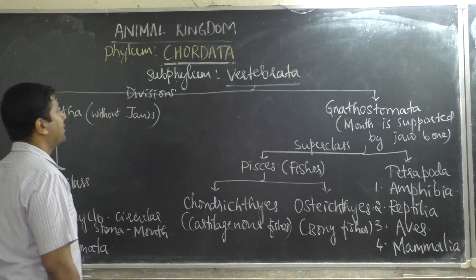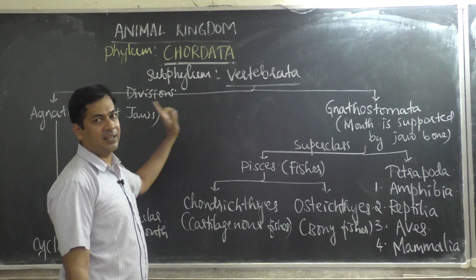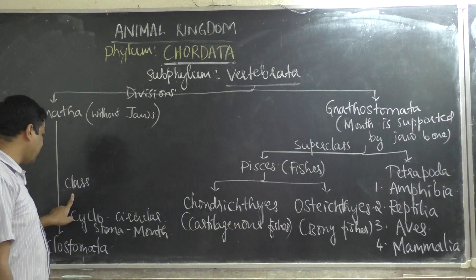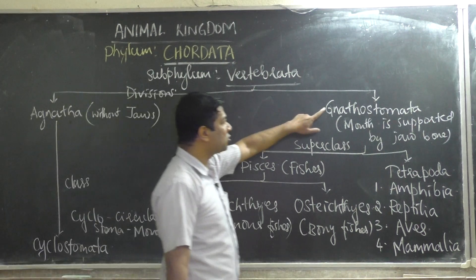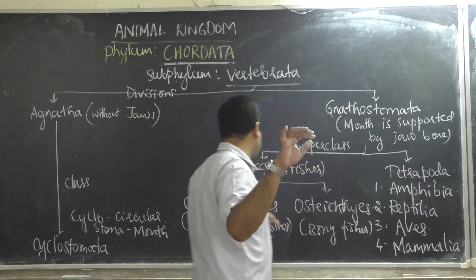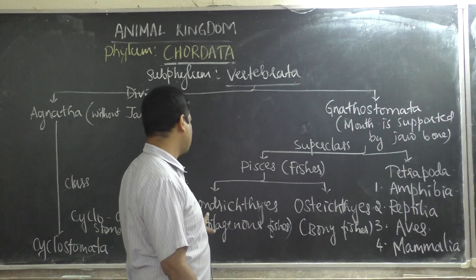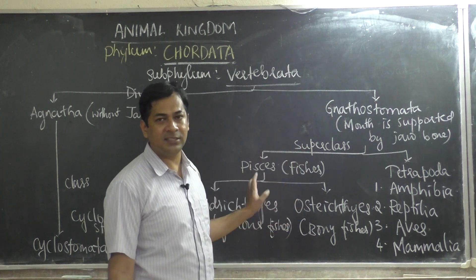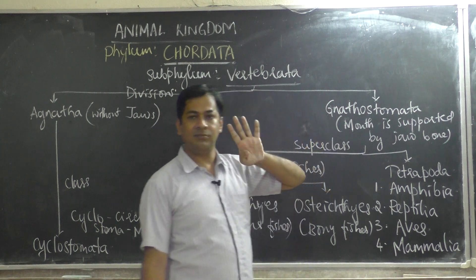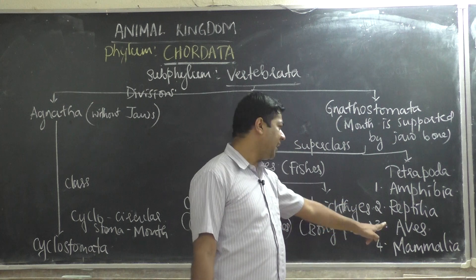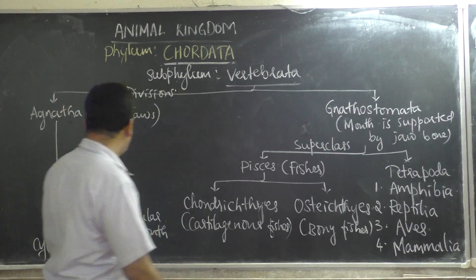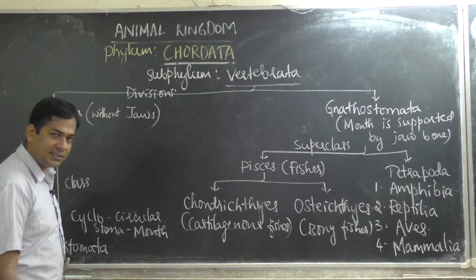So this is the classification of sub-phylum Vertebrata. To recap: Vertebrata has two divisions — Agnatha (without jaw) and Gnathostomata (with jaw). Agnatha has one class: Cyclostomata. Gnathostomata has two super-classes: Pisces and Tetrapoda. Pisces has two classes: Chondrichthyes and Osteichthyes. Tetrapoda has four classes: Amphibia, Reptilia, Aves, and Mammalia. Next, we will learn the detailed characters of class Cyclostomata.